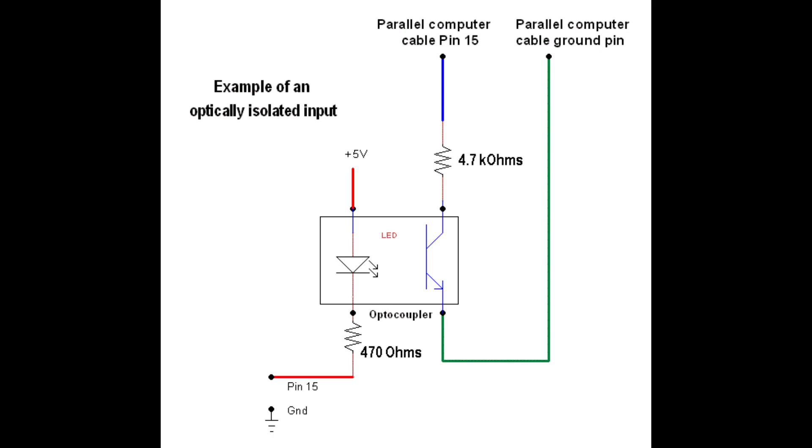One of the nice things about these CNC breakout boards is that, typically, each input connects to an optical coupler. This helps protect the board and the computer from damage. When an input pin connects to ground, a small amount of current flows through the LED. Light from the LED strikes the base of a phototransistor, allowing even a smaller amount of current to flow from the computer's parallel cable, through a resistor, back to ground, switching the computer's input from high to low.